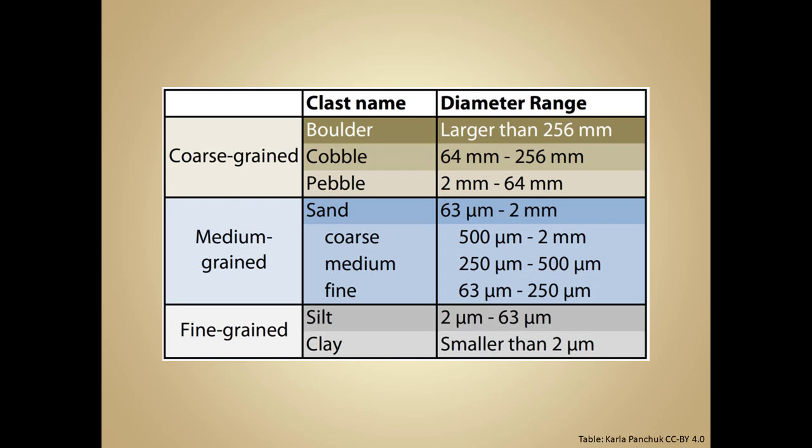Smaller than sand is a category called silt, ranging from about 1/256th of a millimeter to about 1/16th of a millimeter. These are very fine grain particles too small to see without magnification. Clay is the finest sediment — everything less than about 1/256th of a millimeter. Collectively, we use the term mud to describe both silt and clay, or a mixture of the two.